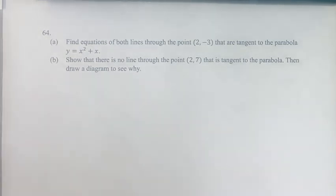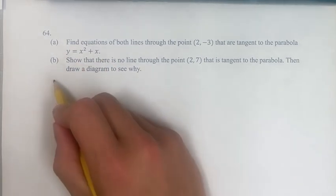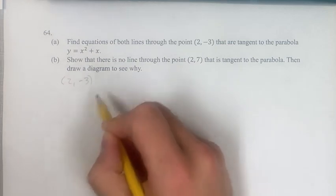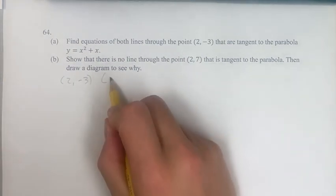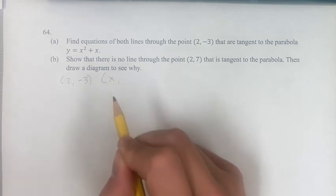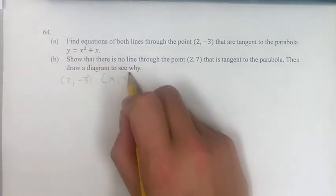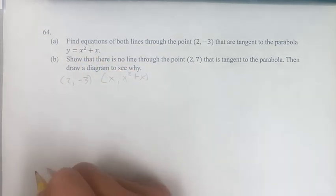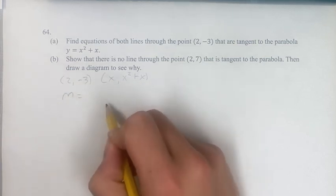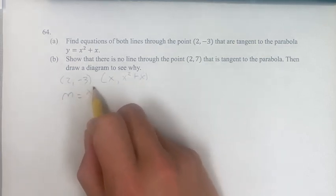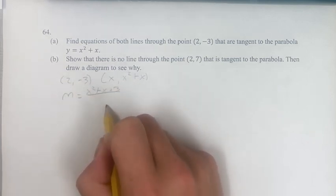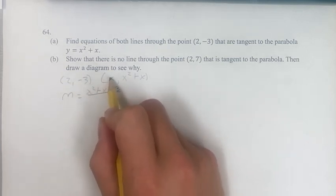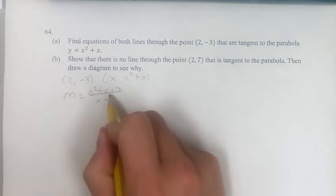First of all, if we want to find the slope of these lines, we know that it goes through the point (2, -3), and for any point that it's actually touching the parabola, if we're plugging in just some random x, then the y value of that point is going to be x squared plus x. And then for the slope, it's going to be the change in y — so x squared plus x minus negative 3, so plus 3 — over the change in x, which is x minus 2.